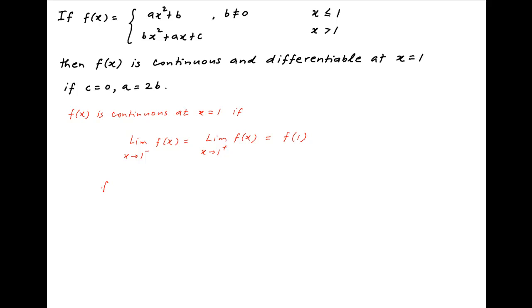When x is less than or equal to 1, f(x) is equal to ax squared plus b. Therefore, the value of f(1) is equal to a times 1 squared plus b, which is equal to a plus b.